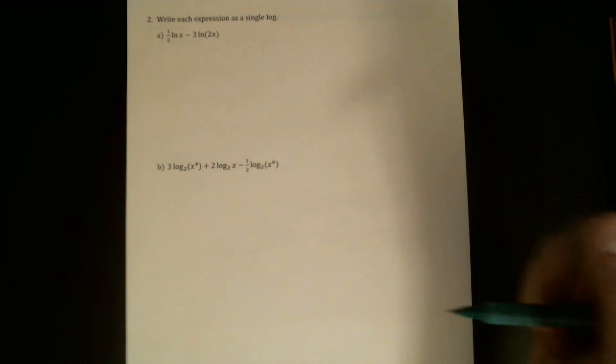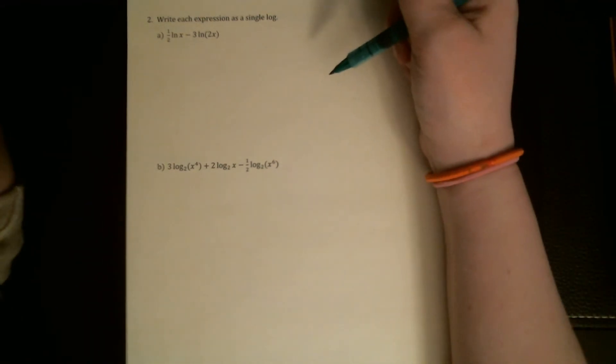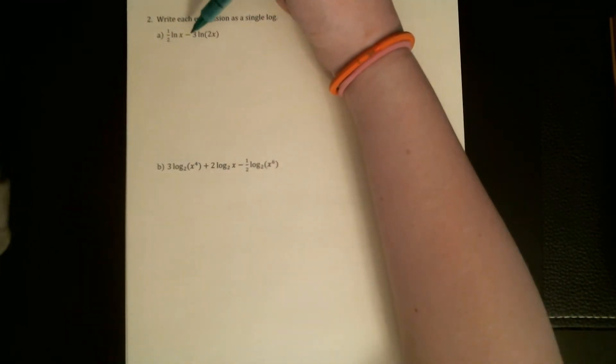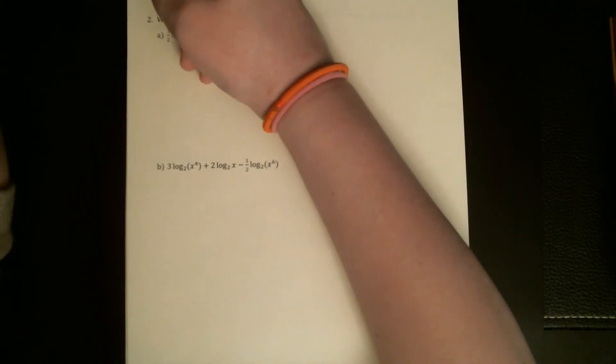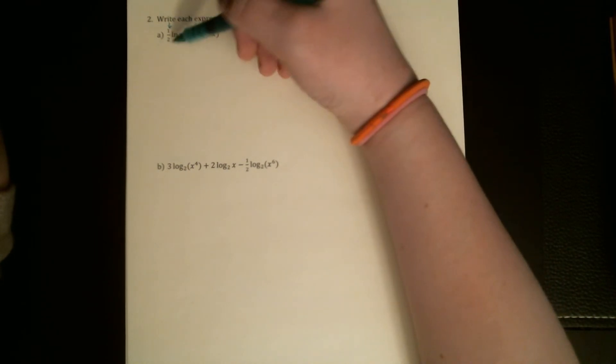The one really big thing to be careful about when we're doing this is remembering that the log property says if you're subtracting two logs with the same base you can combine it into one, but it doesn't say anything about having a coefficient of one-half or a coefficient of three. So always, if you want to combine logs, the first thing you need to do is get rid of those coefficients.